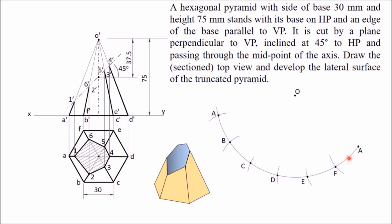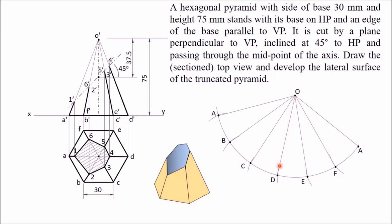Divide this arc into six equal parts: 1, 2, 3, 4, 5, and 6. It starts from A and ends with the same point A, since a hexagonal pyramid has six faces. Starting from point A, cut the arc in sequence, ending back at A. Join O with all these points — these radial lines are the slant edges of the pyramid, drawn with thin lines since parts are cut away. Join A to F, F to E, and so on — these are the base edges, drawn thick.